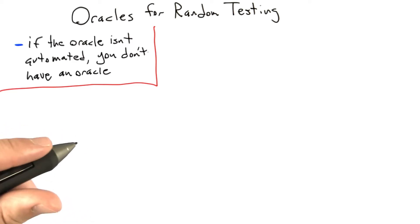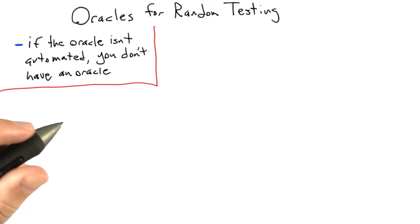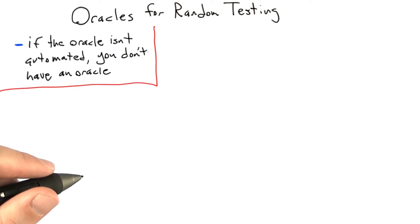We're going to start off with weak oracles. Weak oracles are some of the ones that are most useful in practice, but I'm calling them weak because they can only enforce fairly generic properties about the software under test.